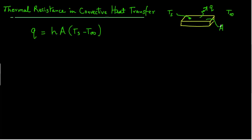So we can take this equation and rearrange the terms as follows: Q equals Ts minus T infinity divided by 1 over H A.